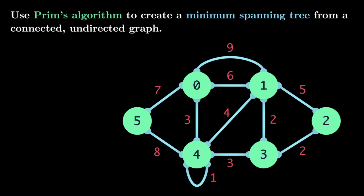Let's say we're given a connected undirected graph like the one we have here, and we want to use Prim's algorithm to create a minimum spanning tree. This video is going to cover how exactly Prim's algorithm works, then we're going to do a demo, and then we're going to code this out in Python.